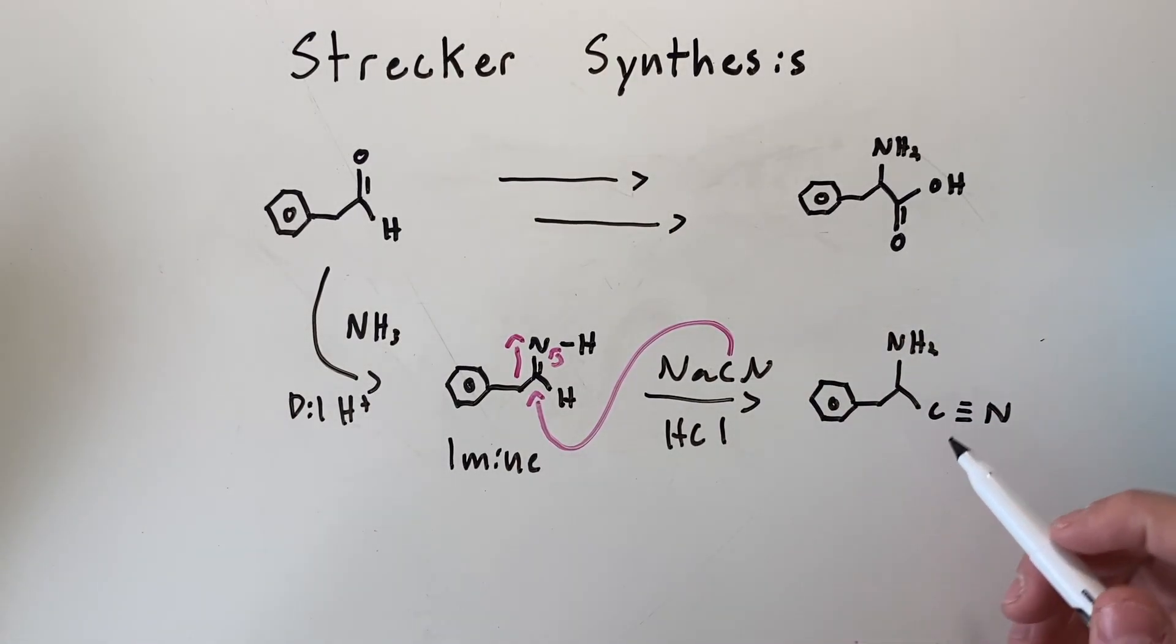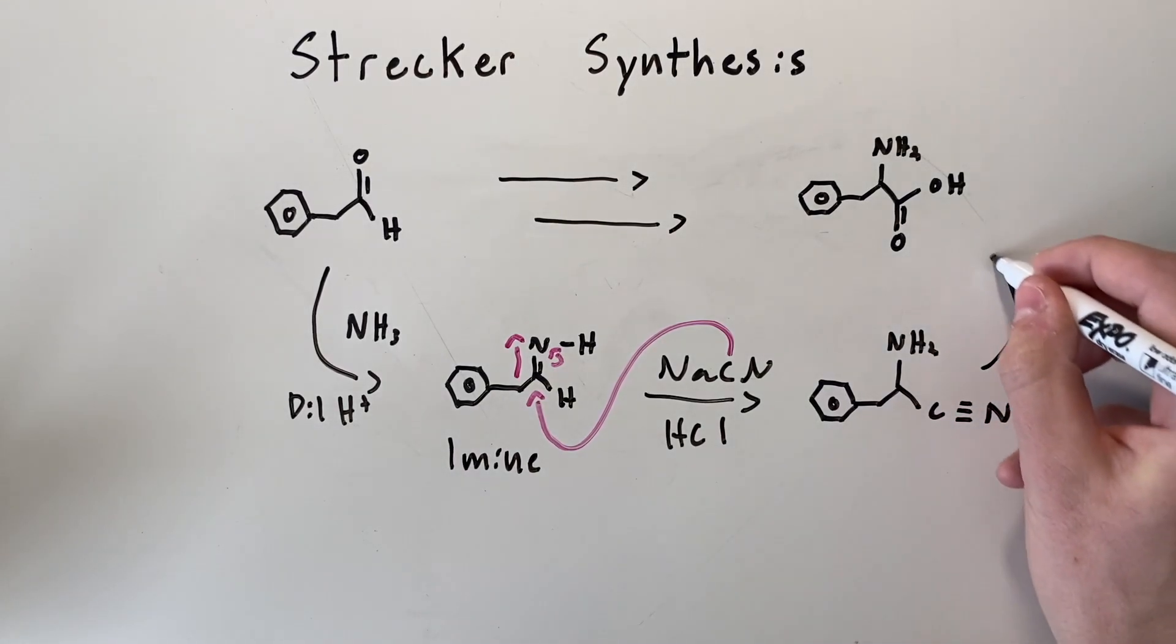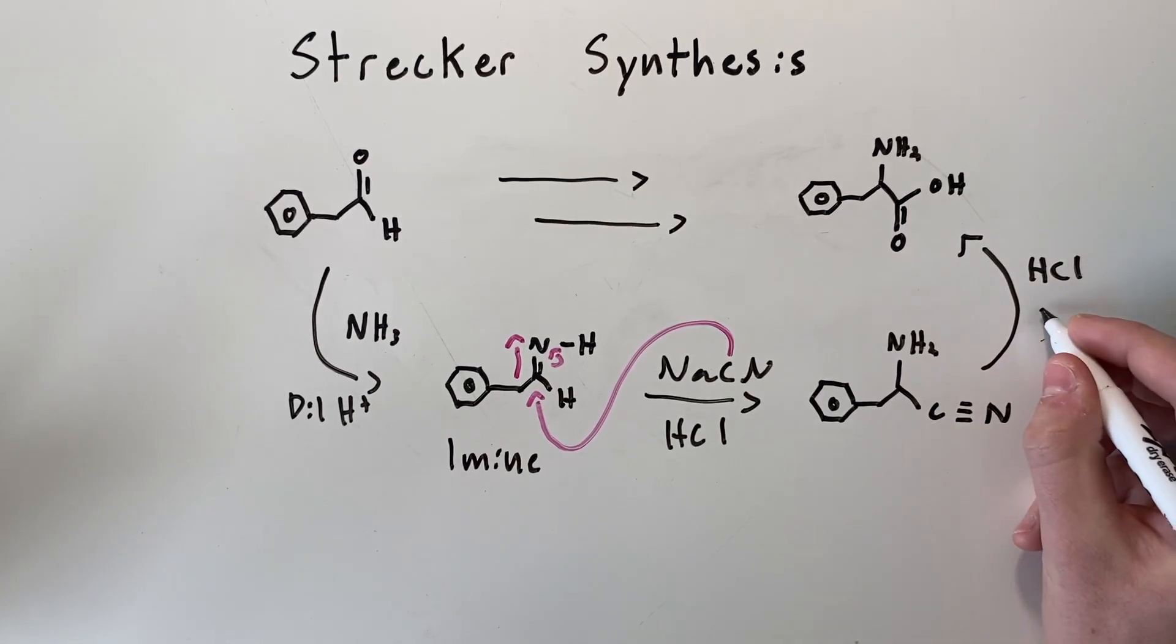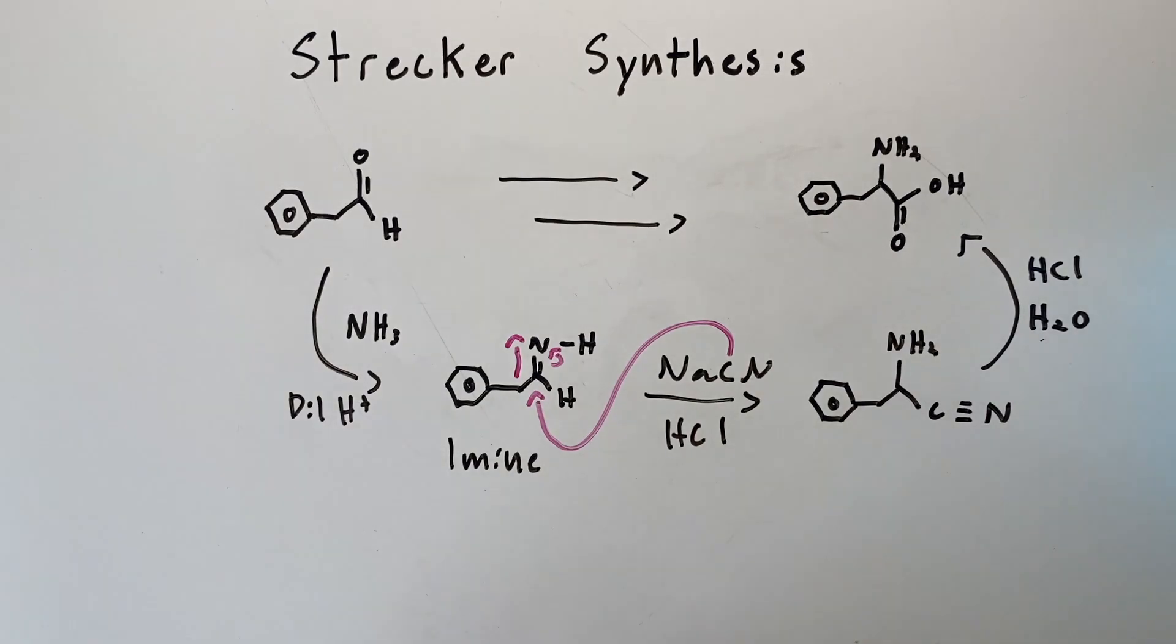Now our molecule looks just like our phenylalanine target molecule. Only thing that we need to do is turn this nitrile group into a carboxylic acid. And we can do that by adding hydrochloric acid and H₂O through an acid-catalyzed hydrolysis reaction. So that's the Strecker synthesis. Thank you so much for watching and I hope that that helped.